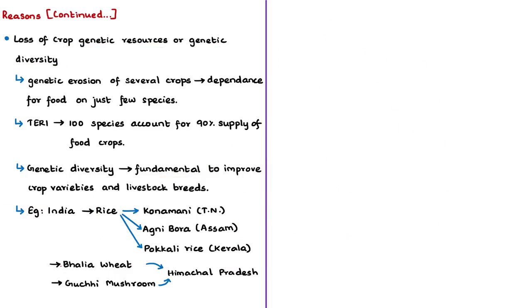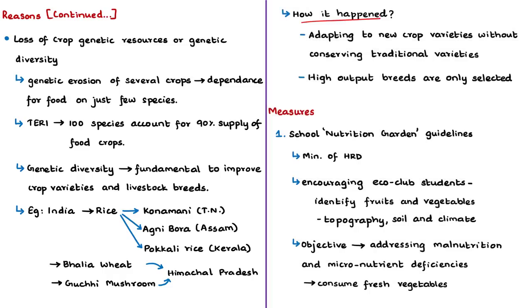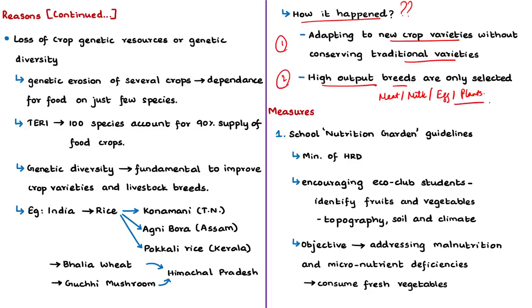How did the loss of genetic diversity or genetic erosion actually occur? First, humans started adapting to new crop varieties without conserving the traditional varieties. Second, because expectations were high for high-output breeds for producing meat, milk, eggs or other plant species, only certain breeds were selected for high output. Because of this, traditional varieties got lost and genetic erosion happened.